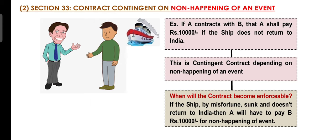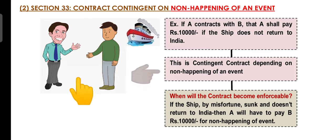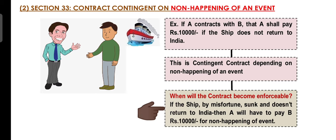Next is Section 33, which deals with Contingent Contracts that depend on the non-happening of an uncertain event. The contract is enforced when that event does not happen. For example, A has entered a contract with B that A will give 10,000 rupees if the ship does not reach India. So A will give B 10,000 rupees when the ship does not reach India. This is called a Contingent Contract dependent on the non-happening of an event.